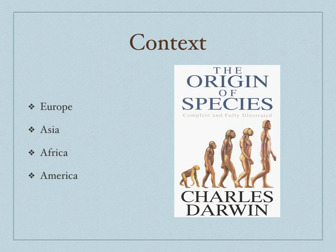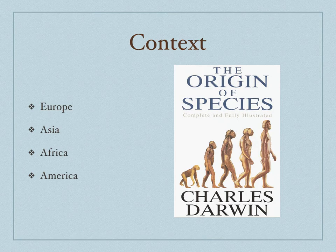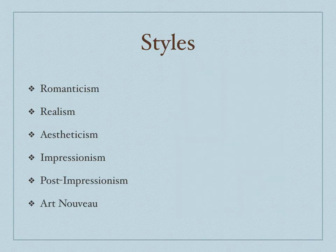Industrialization worked its way to the United States, and what happened is it actually created and helped widen the gap between the North and the South. The North became very urban and industrialized, while the South remained agrarian and dependent on the plantation economy. With the election of Abraham Lincoln in 1860, Southern states began to secede, and the Civil War broke out from 1861 to 1865. That's your context, your overview of what's going on in the world.